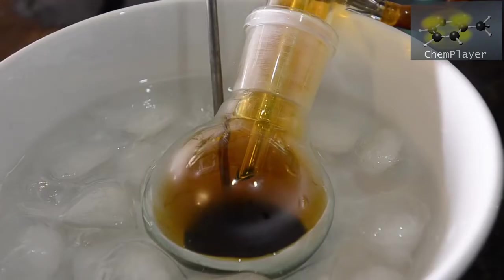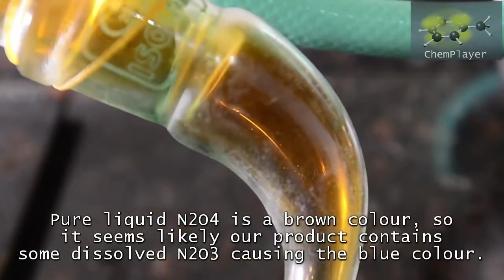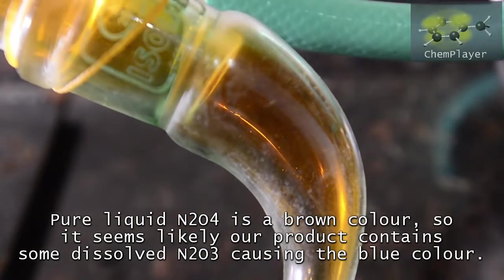Although liquid nitrogen dioxide contains a lot of colorless dinitrogen tetroxide, when pure it's still a dark brown color. Dinitrogen trioxide however is blue. You can see the blue color quite clearly in the receiving adapter.